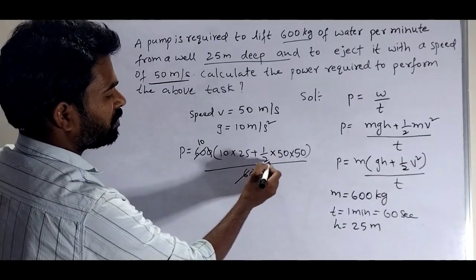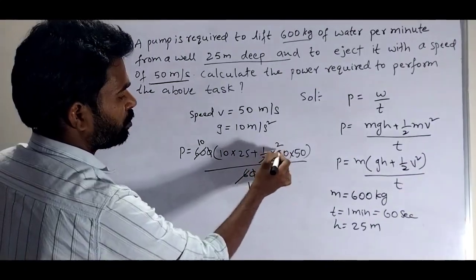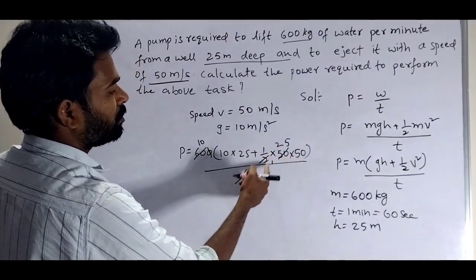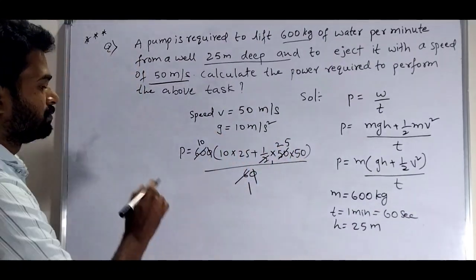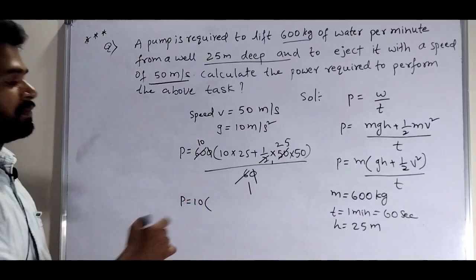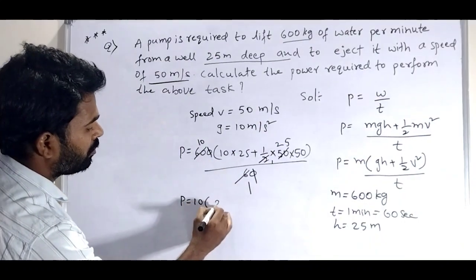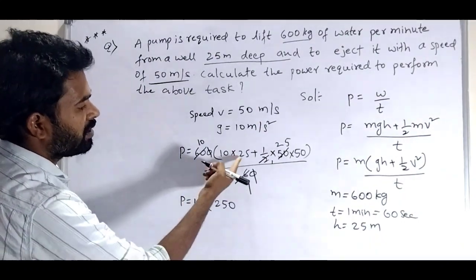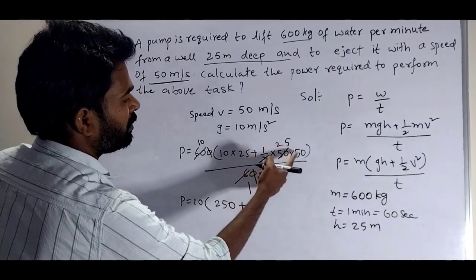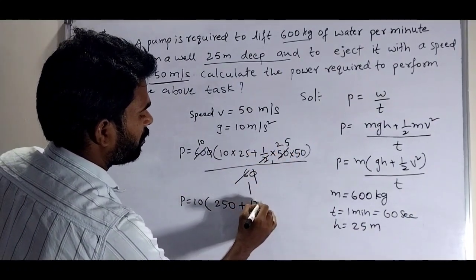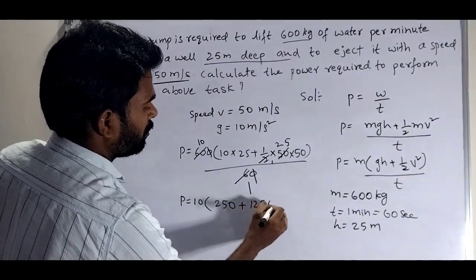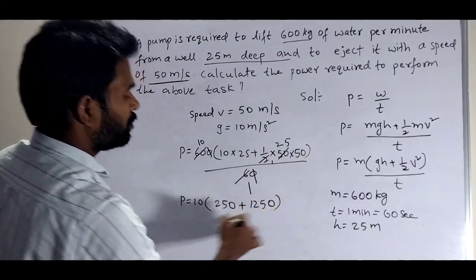After multiplying, 2 cancels leaving 10. Then 10 into 25 is 250, and 25 times 5 gives 125, making it 1250.